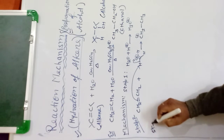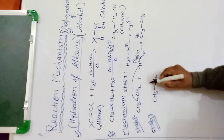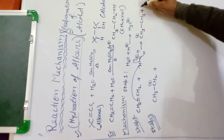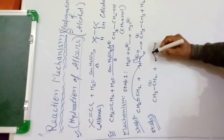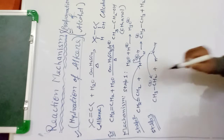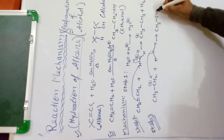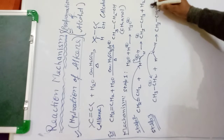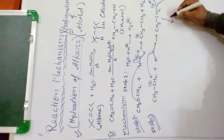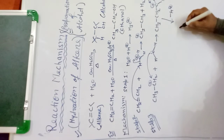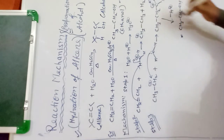In the next step, CH₃CH₂⁺ attacks a water molecule. Water has lone pair electrons, so this lone pair attacks the carbocation carbon, giving CH₃CH₂–OH₂⁺. After that, by loss of H⁺ ion, we get CH₃CH₂OH — that is ethanol, our alcohol product.